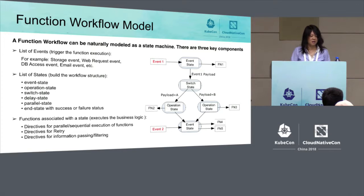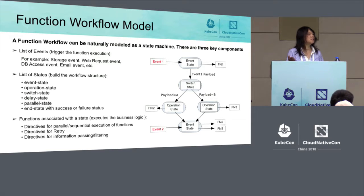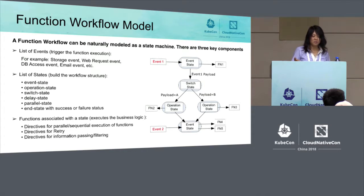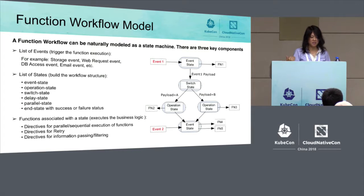For functions, the workflow model provides directives for you to specify whether functions will be executed in sequence or in parallel. It also provides directives to specify function retry — for example, the retry interval, how many times it should retry, and so on. The workflow model also provides directives for specifying how information should be passed and filtered from one state to the next, or from one function to the next.